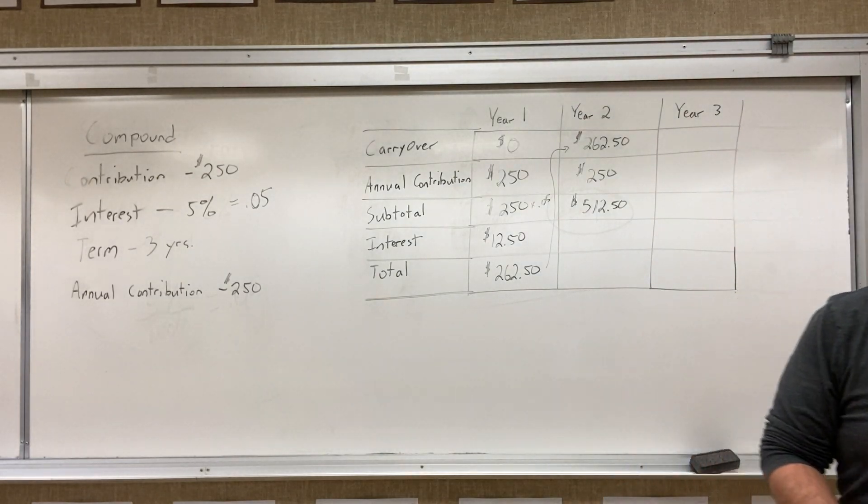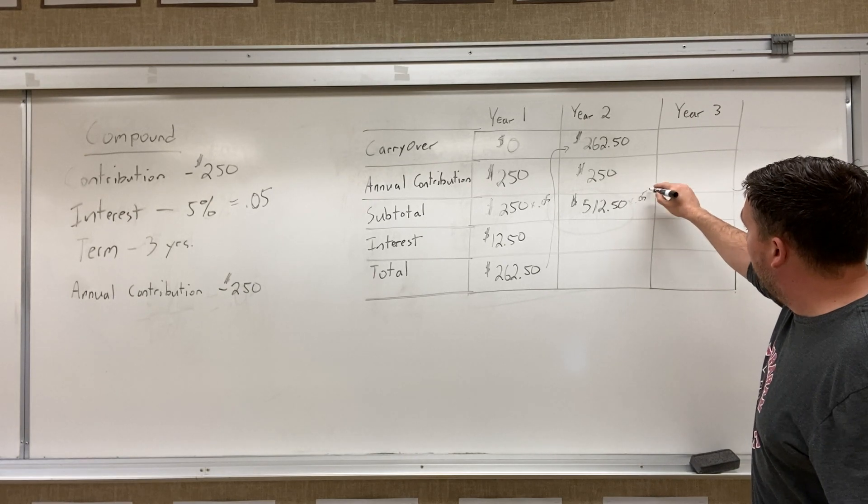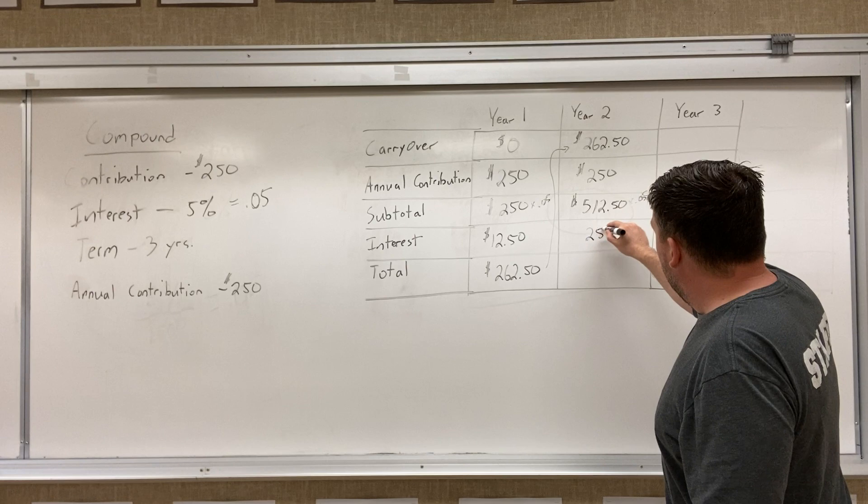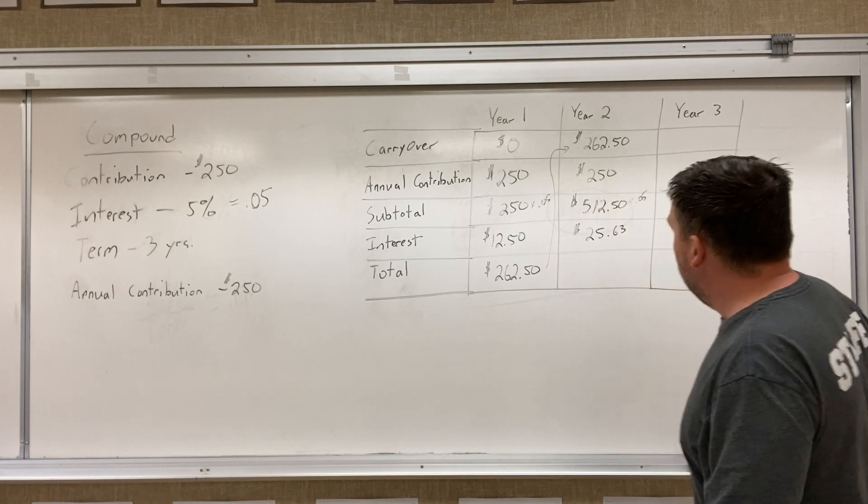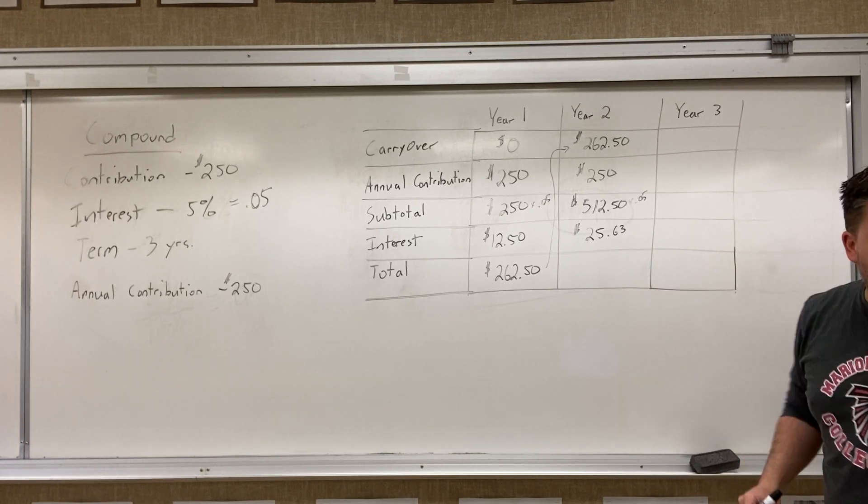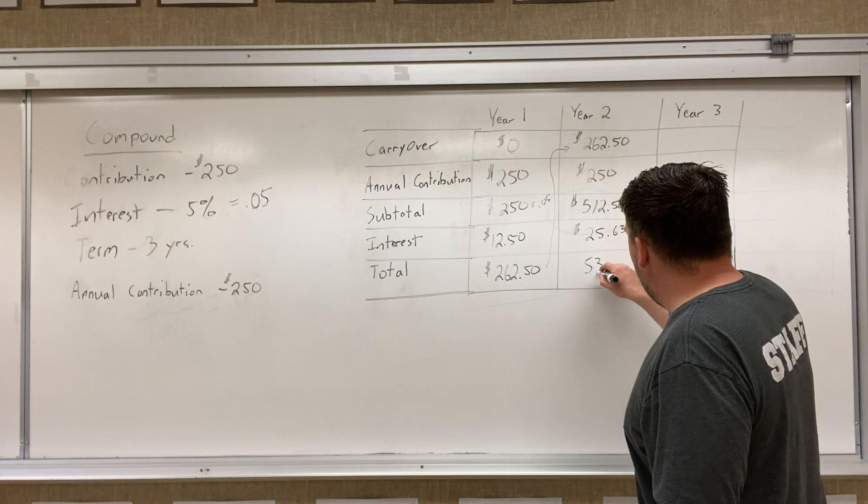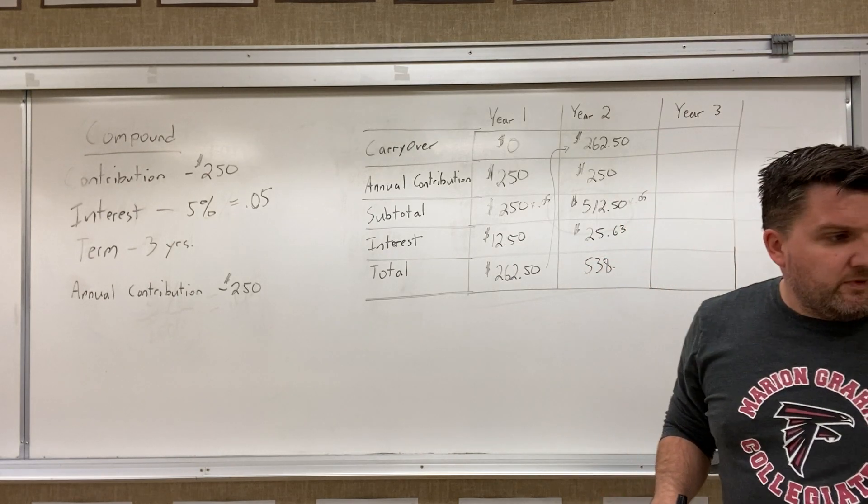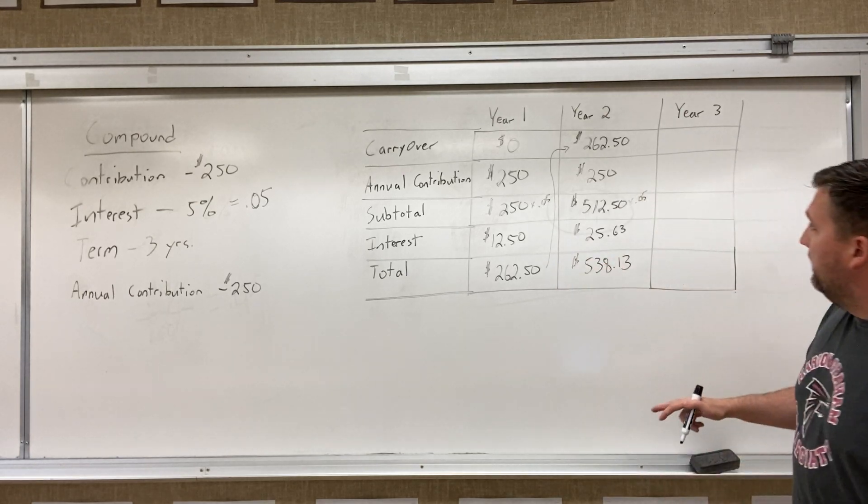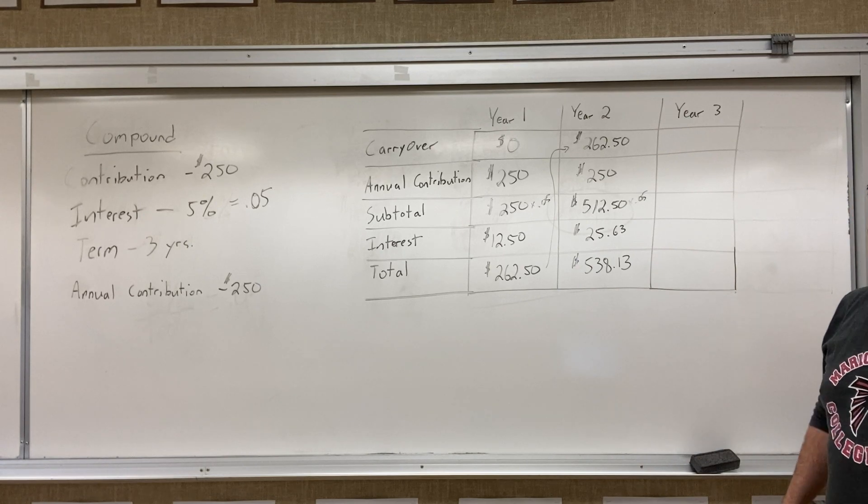So now, when we go to do this, if we times this by 0.05, we should end up having $25.63 sitting in our account, or adding on to our, for our interest. Which at the end of the year will give us $538.13. So now that's what we'll be sitting in there when we add these two numbers together to get $538.13.